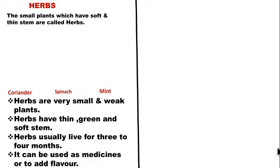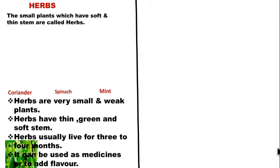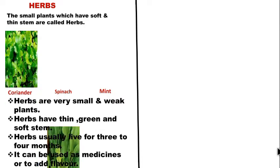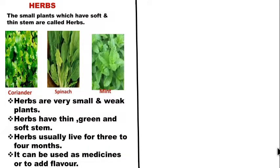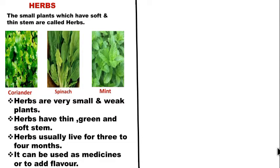The next type of plants are herbs. Small plants which have soft and thin stem are called herbs. For example: coriander, spinach, mint — plants we usually see in our houses. Herbs are very small and weak plants with a thin, green and soft stem. They usually live for three to four months and can be used as medicines or to add flavor.